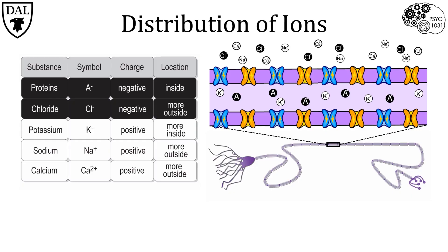This different distribution of ions is important for the electrochemical gradient, which is necessary to provide the driving force for ion movement. Ion movement is essential for the two important jobs of neurons, which enable the signaling from their post-synaptic receptors and then along their axons to their axon terminals.